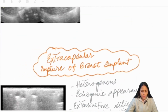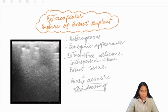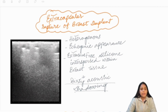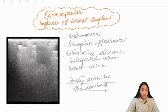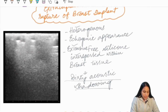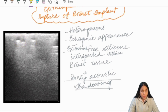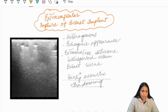Next is extracapsular rupture of the breast implant. Breast implants are made up of silicone, and in extracapsular rupture these silicone particles are now free — freely interspersed throughout the breast parenchyma. They give rise to this heterogeneous echogenic appearance, as you can see here. These are all free silicone particles which produce dirty acoustic shadowing behind them. This is the snowstorm appearance of an extracapsular rupture of a breast implant.